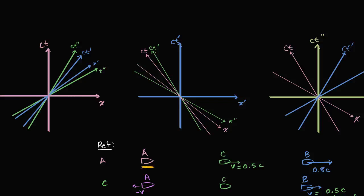Let's revisit a scenario we've seen in several videos, especially the last video where we tried to find a neutral frame of reference. We're in Spaceship A, in an inertial frame of reference. At time equals zero in our frame of reference, Spaceship B is exactly where we are, but it's traveling in the positive x direction at eight-tenths the speed of light.